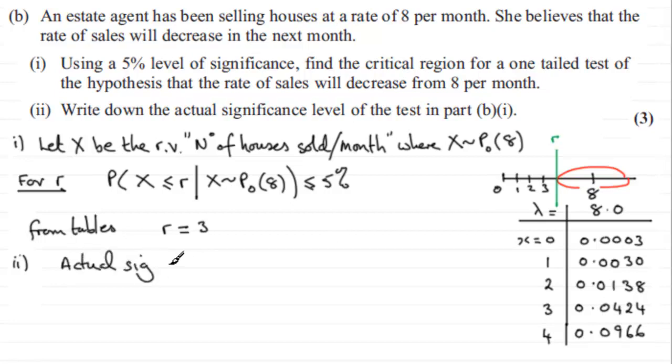So what we need to do now is find out then for the actual significance level. Actual sig level is given by the probability of X being less than or equal to the critical value, which we now found out as 3, given that X is distributed as a Poisson distribution with mean 8. And we can get that value being less than or equal to 3 from the tables here, and it's 0.0424. In other words, it's a percentage 4.24%, okay?